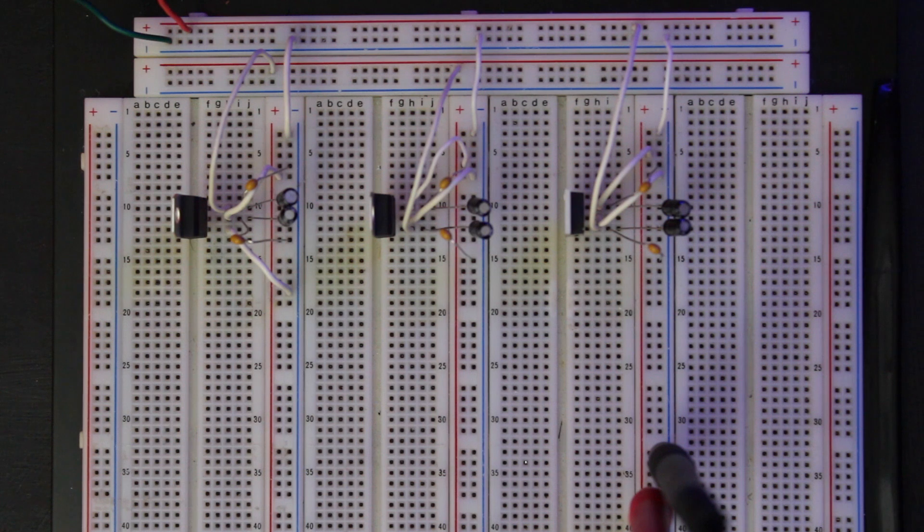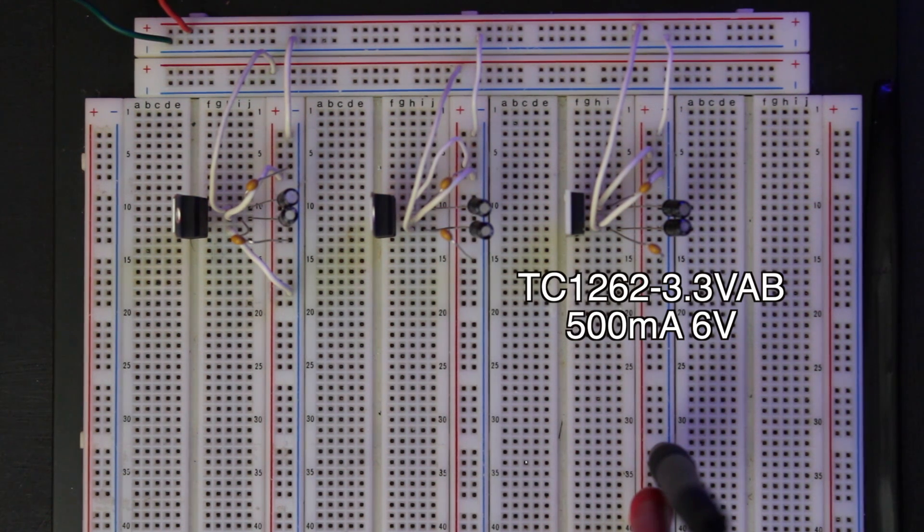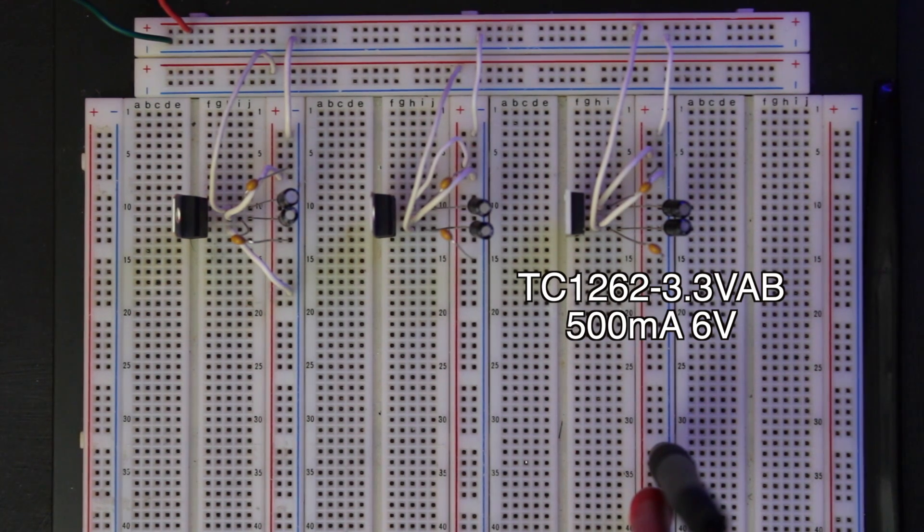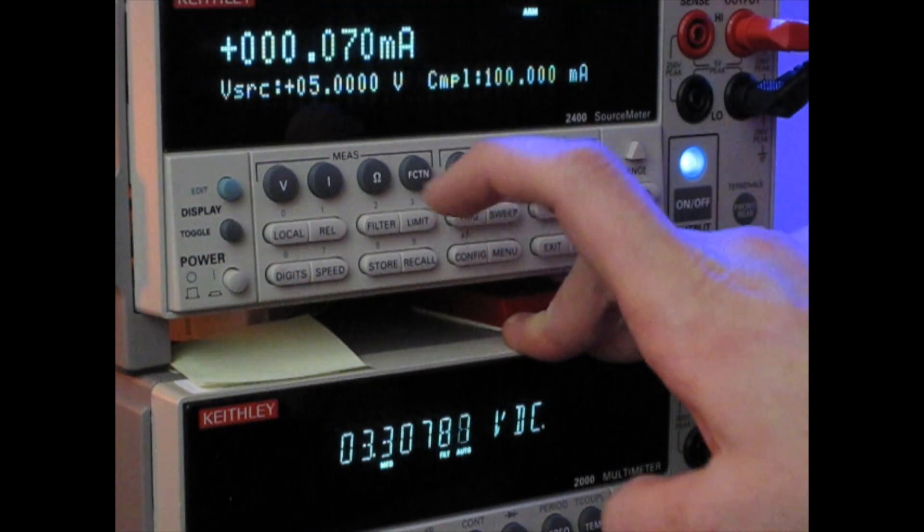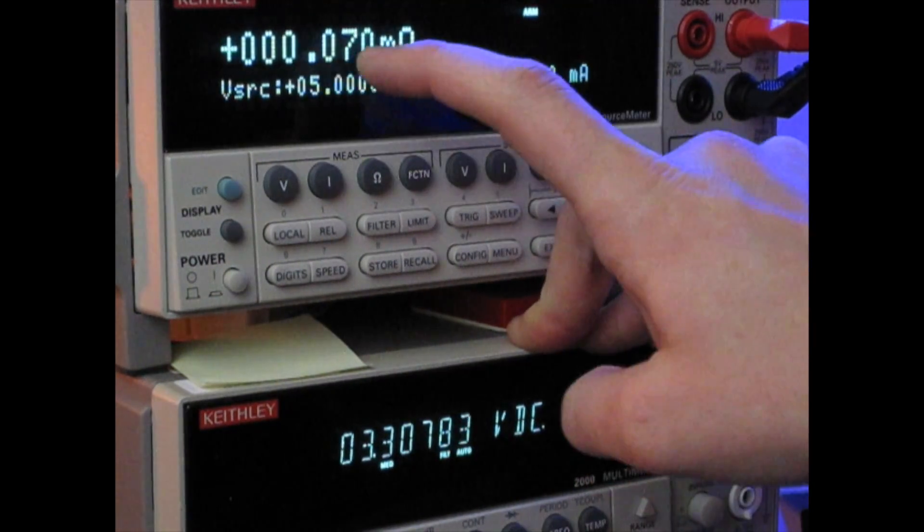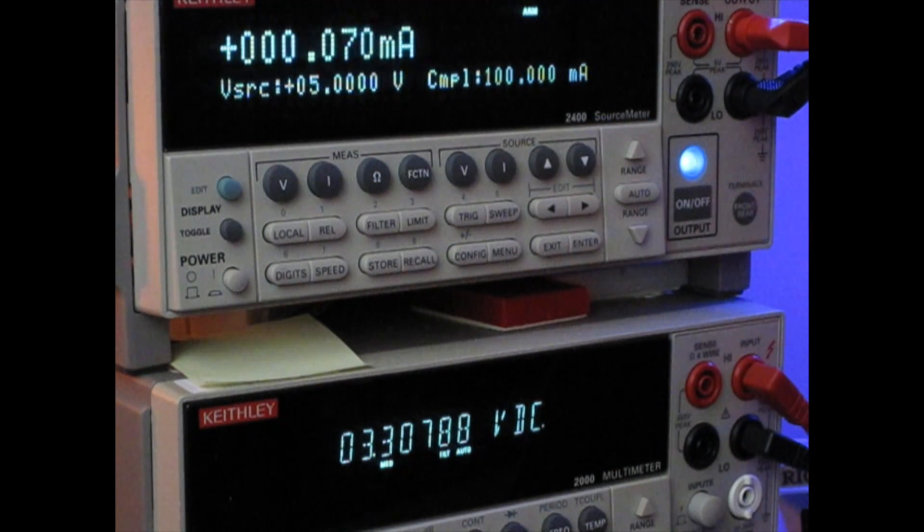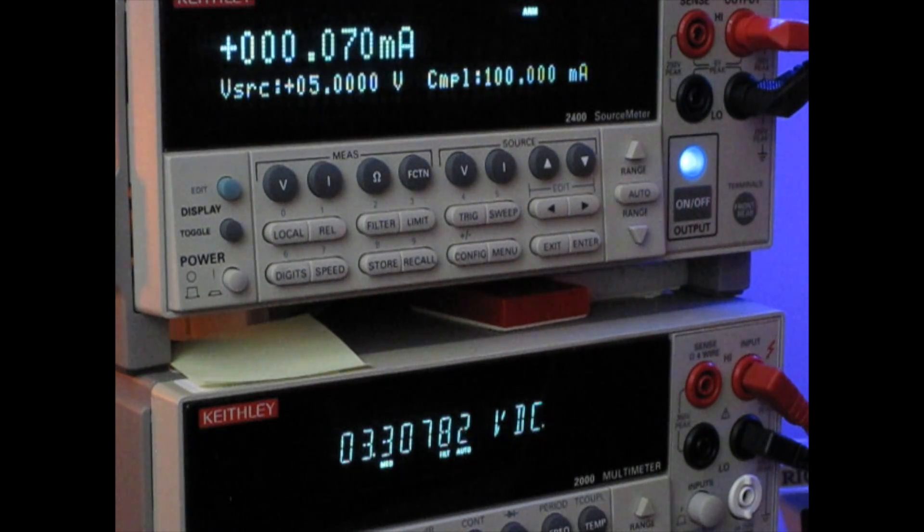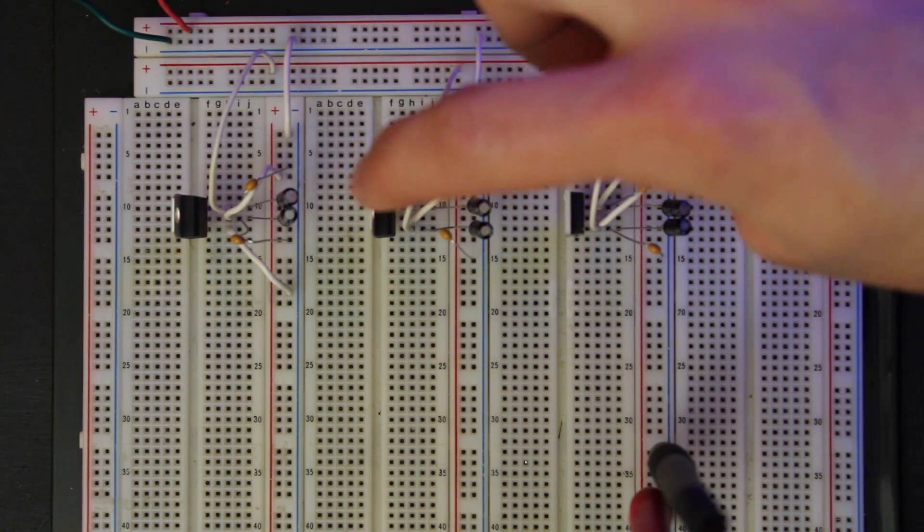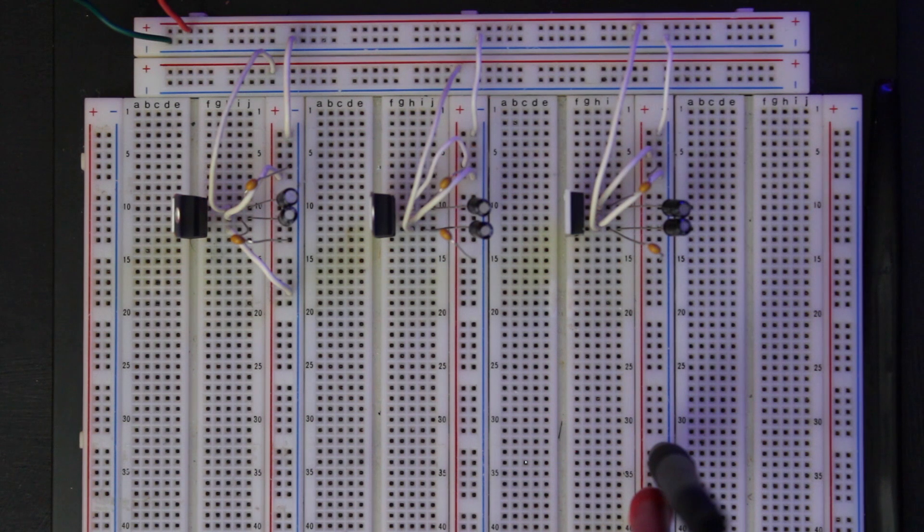Okay, so this next one is the TC1262-3.3VAB. It can also do 500 milliamps, but it can only do six volts max on its input voltage. So you got to keep an eye on that. But when you look up at the meter, you can see it has incredibly low quiescent current draw. So only 70 microamps, or 0.07 milliamps. Its output voltage is a clean 3.3 volts, no load, so no issues there.